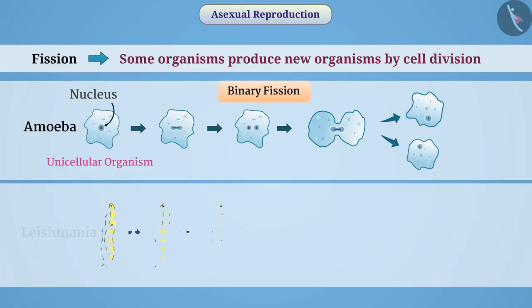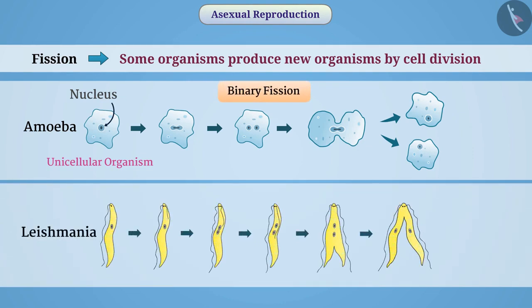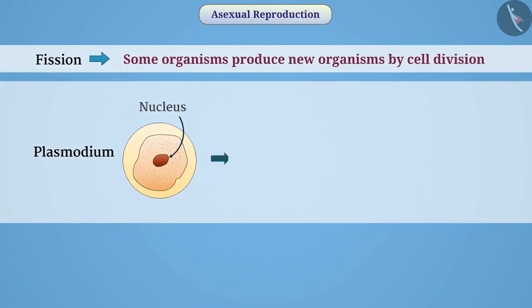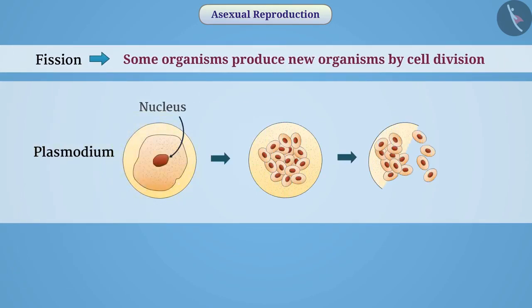Some unicellular organisms, such as leishmania, have a more organized body structure. In such organisms, after the division of the nucleus, the cell divides from a fixed orientation. In some organisms such as the malaria parasite plasmodium, one cell divides into several cells. We call this multiple fission.